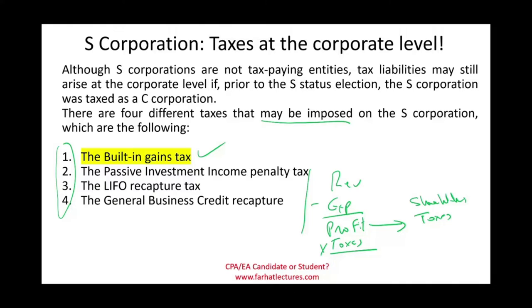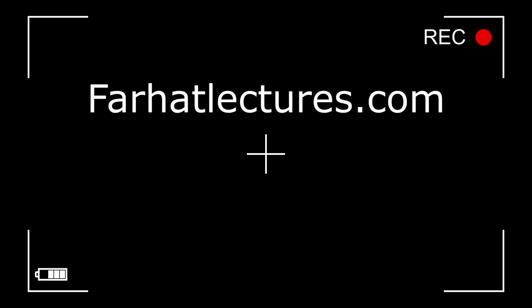Remember, the S corporation generates revenues, incurs expenses, has a profit, and that profit goes to the shareholders who pay taxes. Under those four circumstances, the corporation itself will have to pay taxes. We'll discuss each of those four items separately, starting with the built-in gains tax.